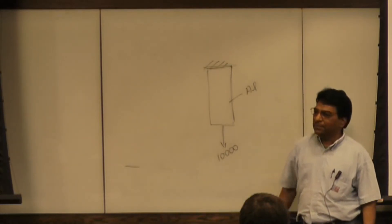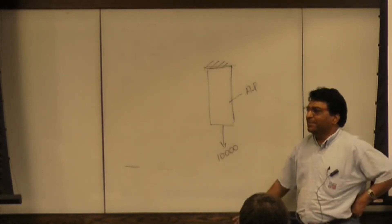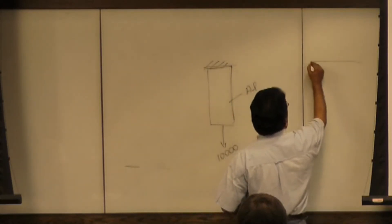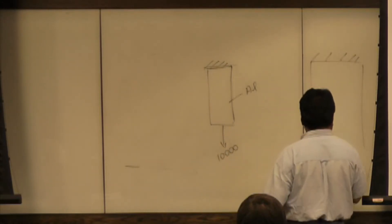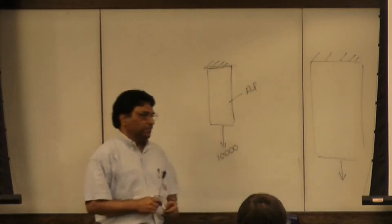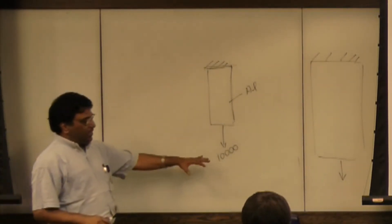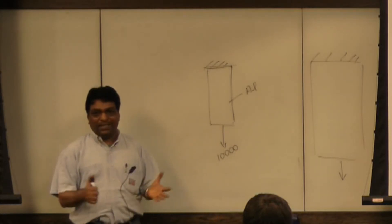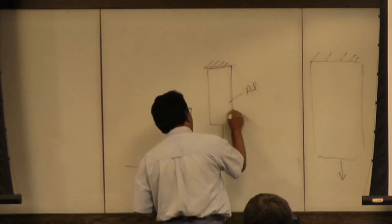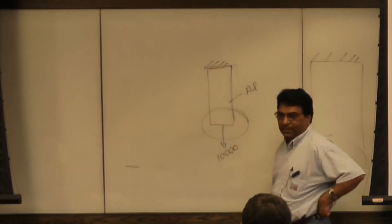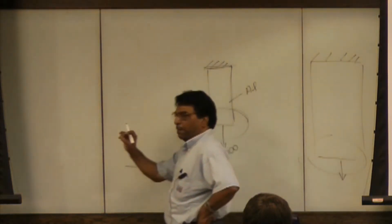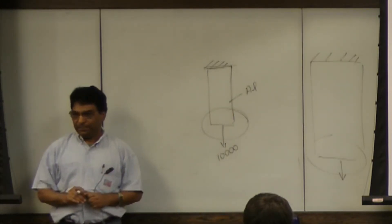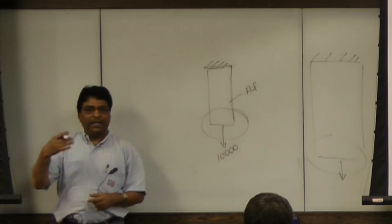Can I make the statement that aluminum breaks at ten thousand pounds? No — because if I give you a bigger piece of aluminum it might take fifty thousand pounds. So this ten thousand pounds doesn't tell the customer anything. You have to somehow remove this size from the equation, such that if I say aluminum breaks at a certain number, that number doesn't change whether I'm talking about a small piece or a large piece.